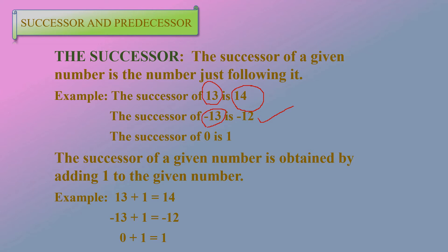One more definition: the successor of a given number is obtained by adding 1 to the given number, so we get the successor. For example, 13 is the given number — add 1 to get 14.